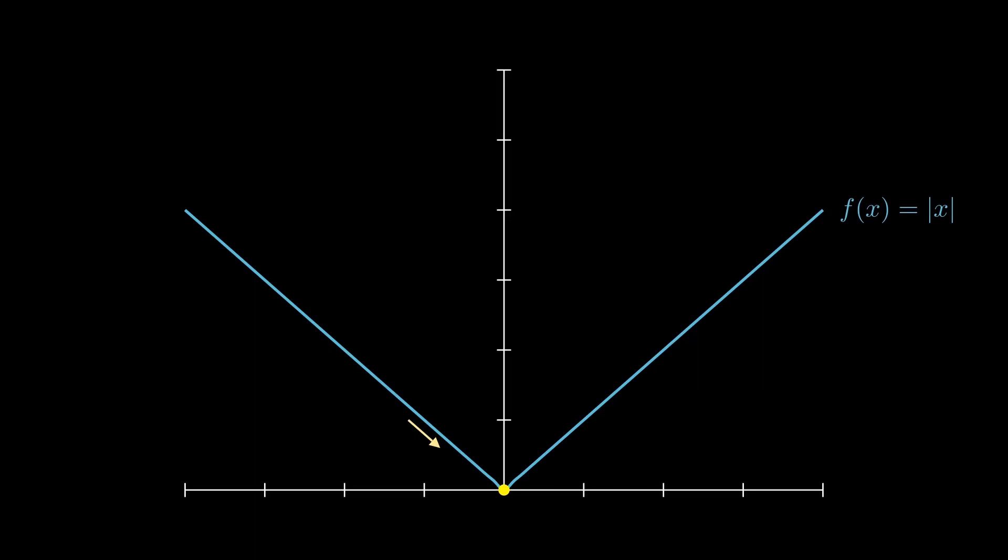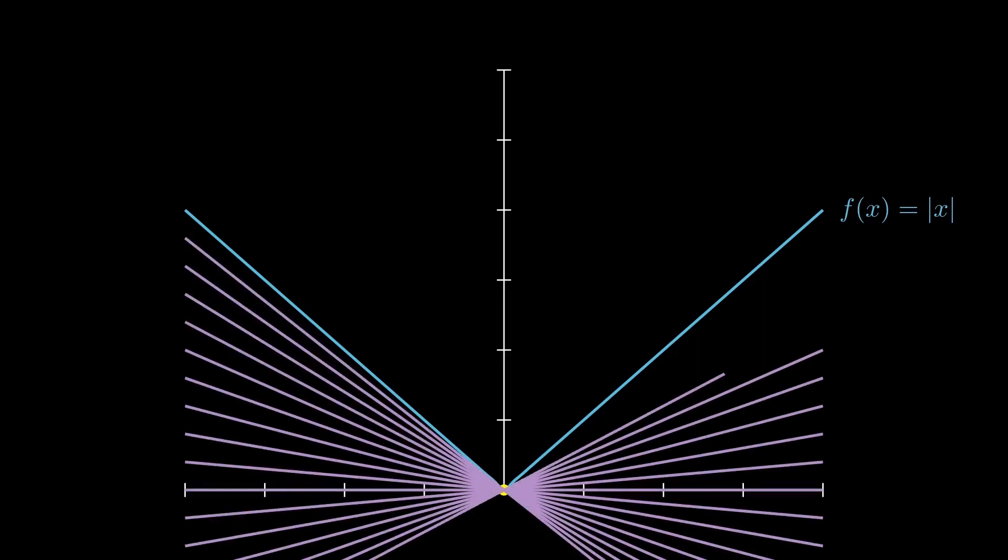Or similarly, coming from the right side, we could argue that it should be one. We could however say that we can draw multiple tangent lines here, that all fit the criteria of being fully below the function.